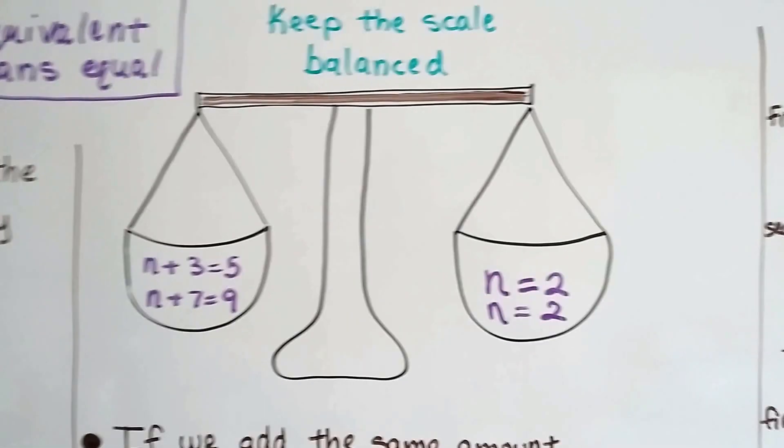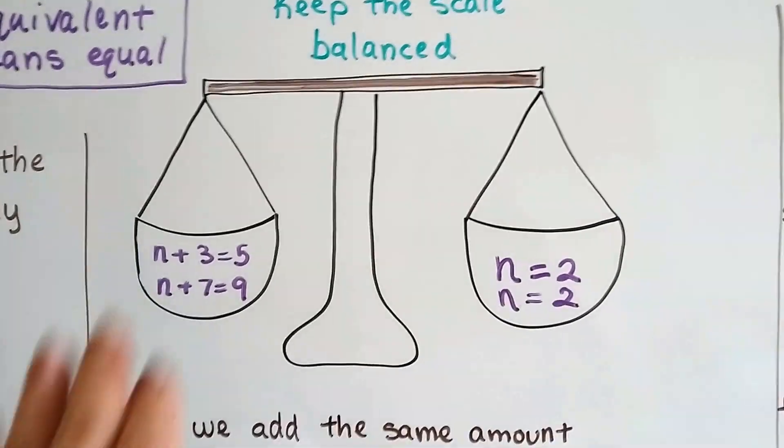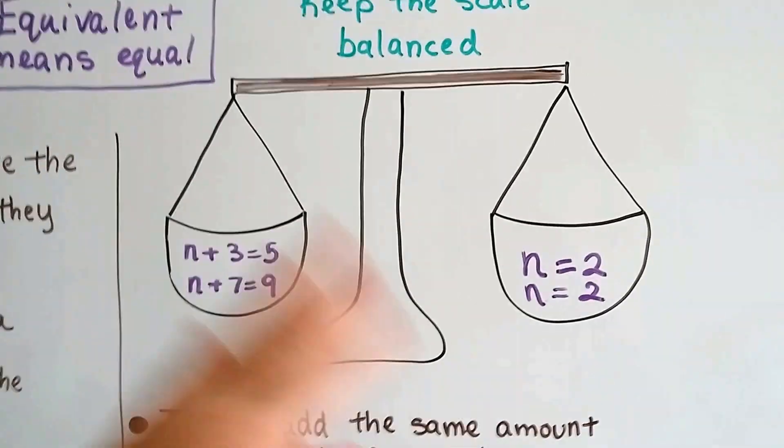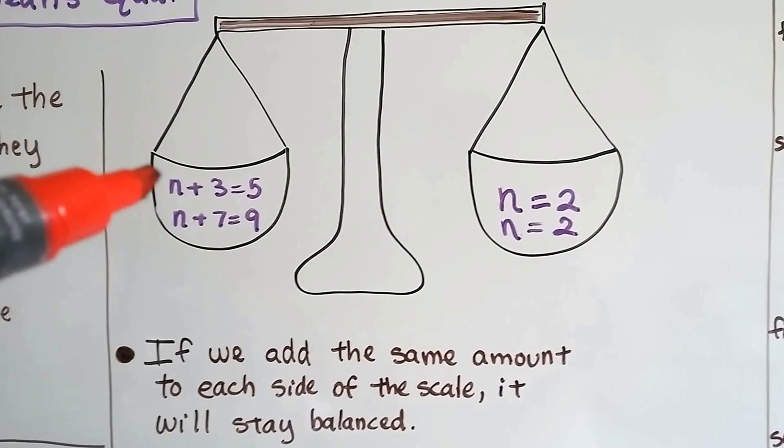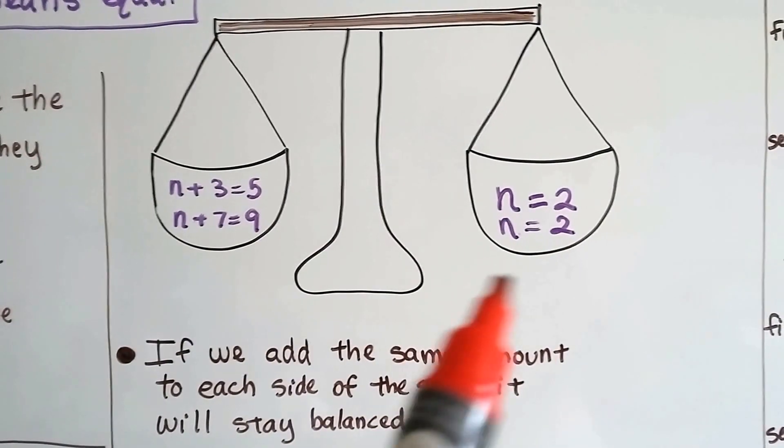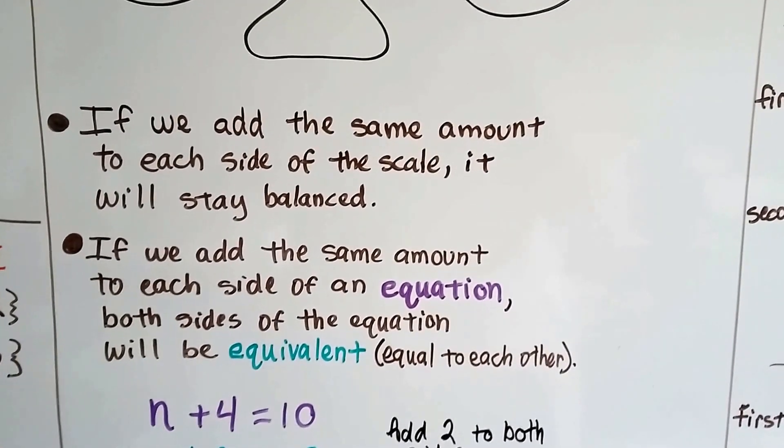Keep the scale balanced. Equations are like a scale. What's over on one side is on the other side and you want to keep it balanced. You don't want one side to be heavier than the other. So these both have n equals 2 as a solution, so they're balanced. If we add the same amount to each side of the scale, it'll stay balanced.